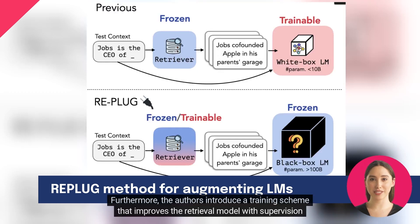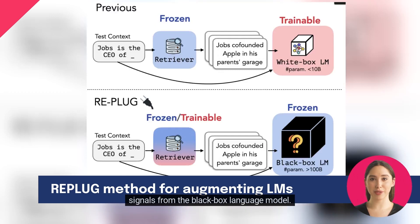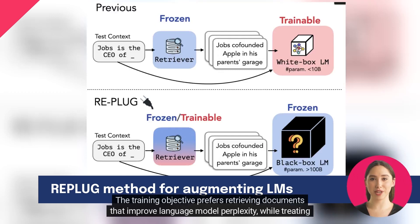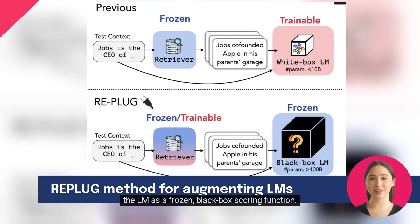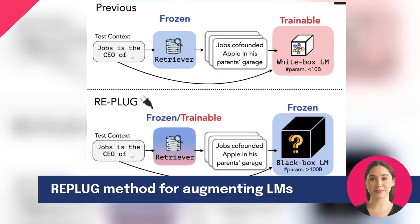Furthermore, the authors introduce a training scheme that improves the retrieval model with supervision signals from the black box language model. The training objective prefers retrieving documents that improve language model perplexity, while treating the LM as a frozen, black box scoring function.